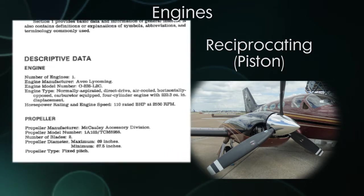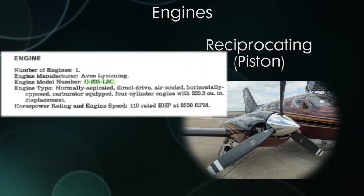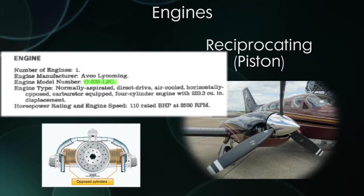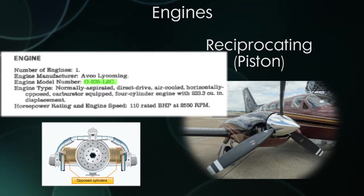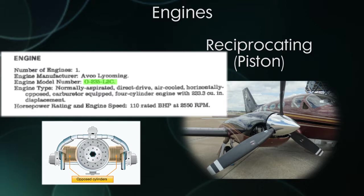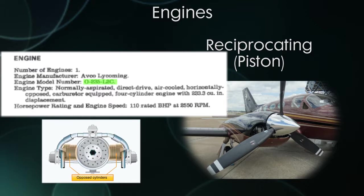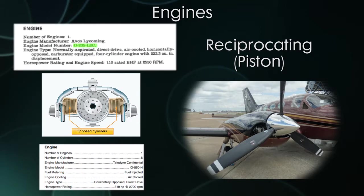When you look at a model number, you'll see something like this. The O means that the cylinders are horizontally opposed — arranged horizontally and opposite of each other. In a car, you'll usually have vertical cylinders; in an airplane engine, they are horizontal. The 235 is the cubic inch displacement, or how much air and fuel the engine can hold, and the last part is the model number. A lot of the POHs will explain the capabilities of the engine and decipher these codes — you can look in section one for those.